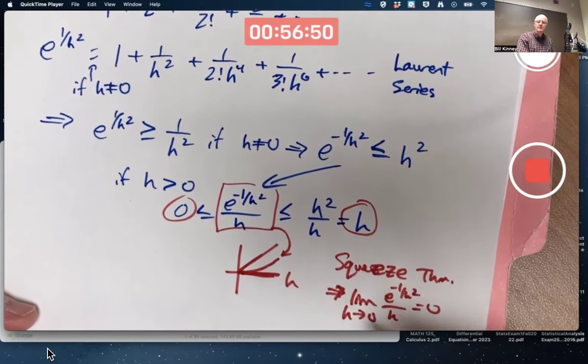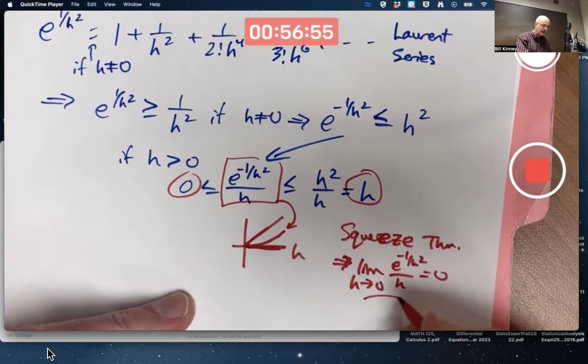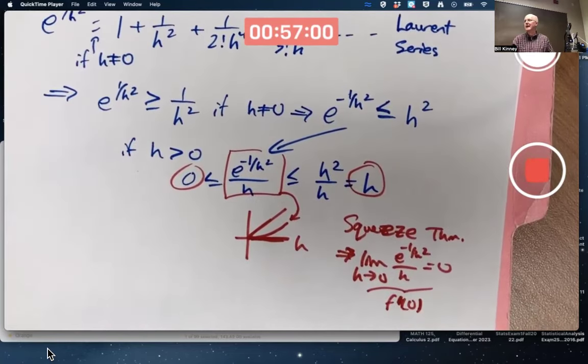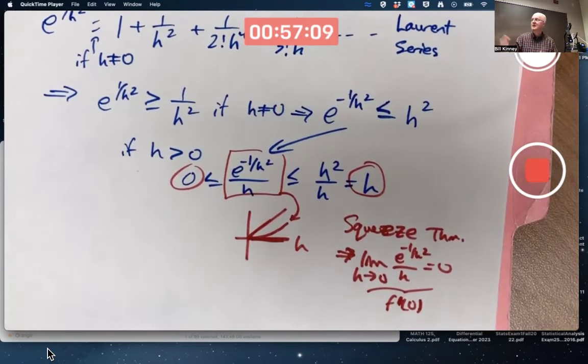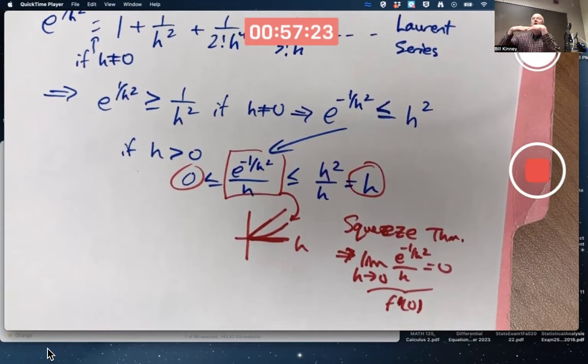This implies at least the limit as h approaches zero from the right of this function is zero. You also can do something similar as h approaches zero from the left. And that is f prime of zero. So that's a more formal proof that f prime of zero is zero. It's a bit tricky. I had to use this Laurent series idea and some other subtle things. But you can prove f prime of zero is zero, and you can likewise prove f double prime of zero is zero, f triple prime of zero is zero, etc. Any derivative value at zero exists and is zero. Not surprising because the graph is so close to horizontal there near the origin.